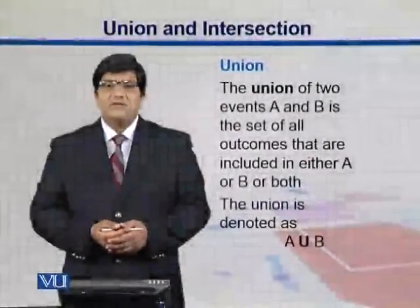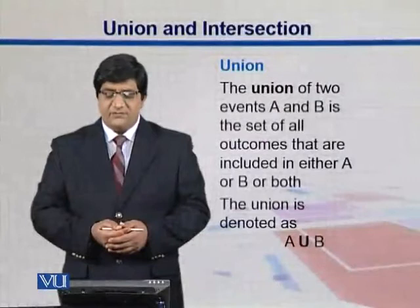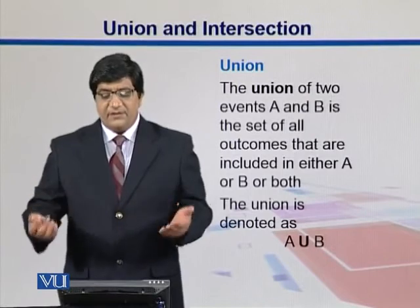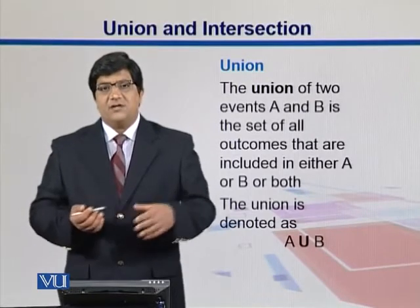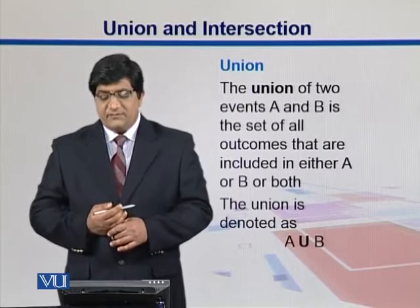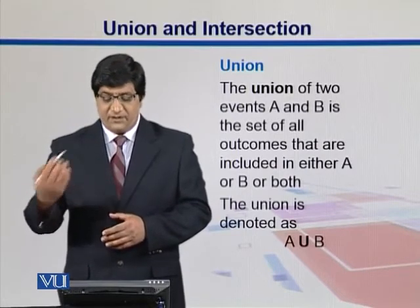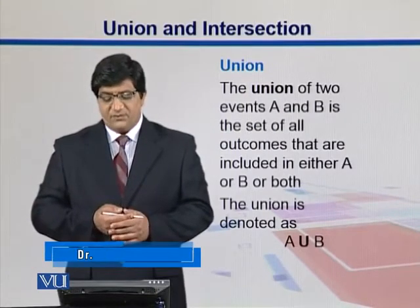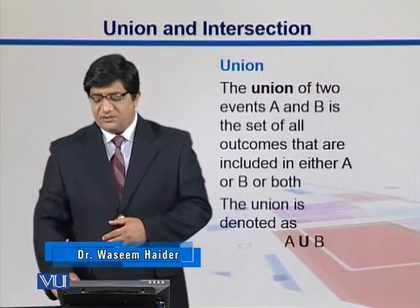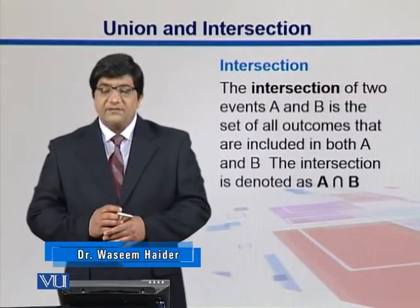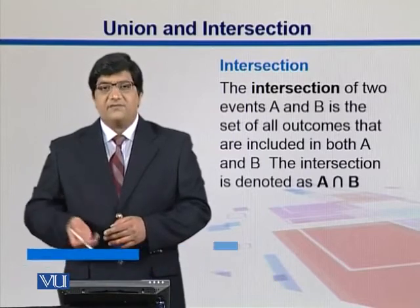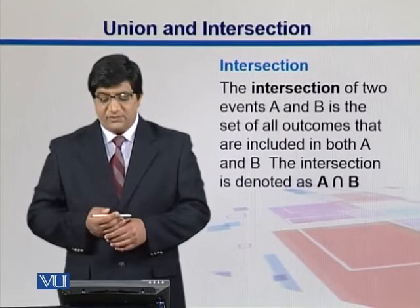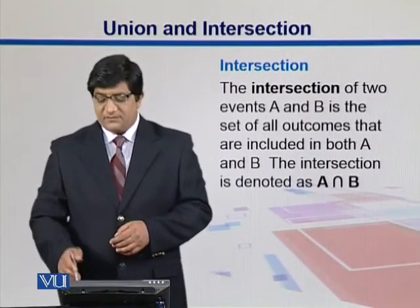Let's see how we can combine two events together. Union is where we take two events A and B and put their outcomes all together. The union includes outcomes which are either in A, in B, or present in both of them, and is denoted as A union B. Intersection is where we get whatever is common between both of them — the set of all outcomes included in both A and B — denoted by the intersection sign.